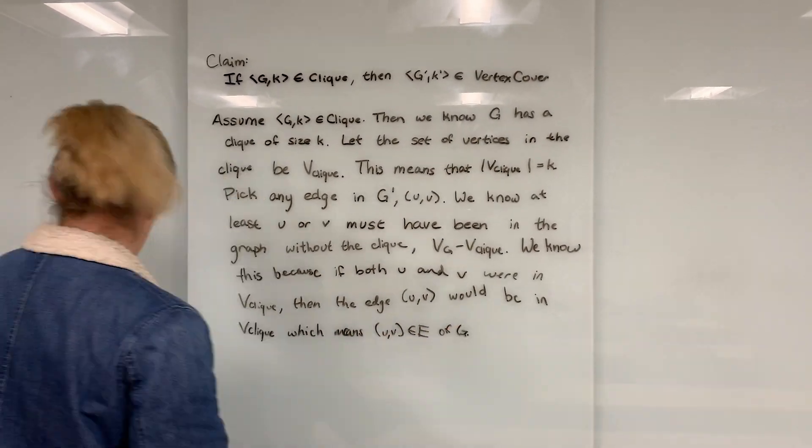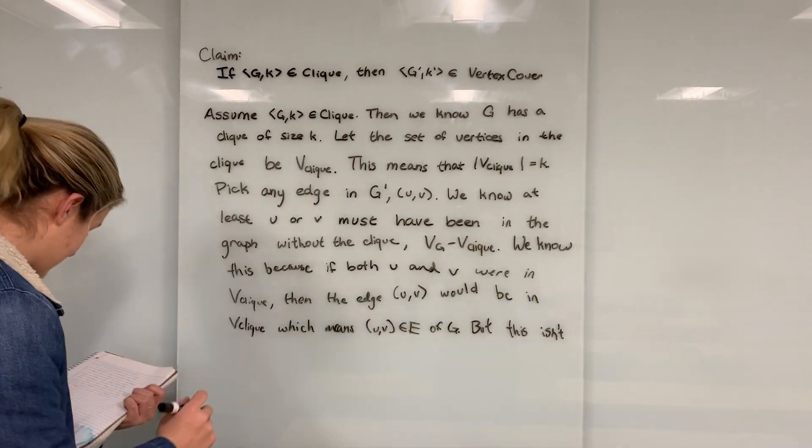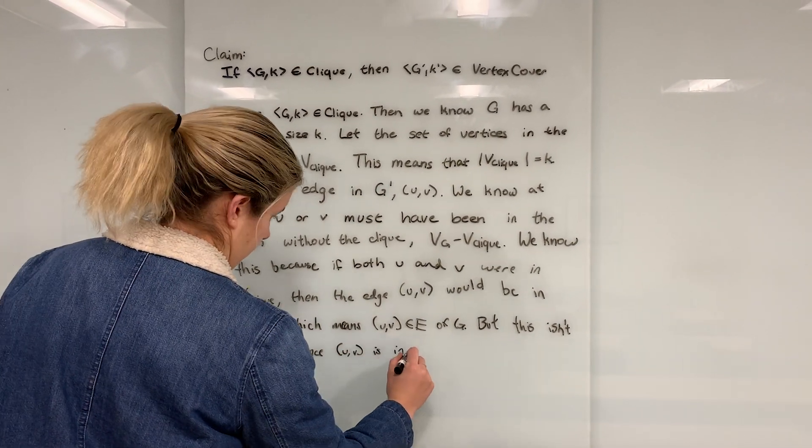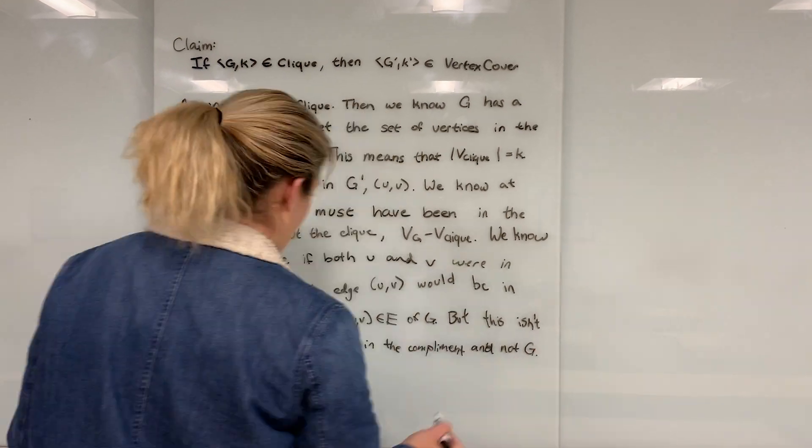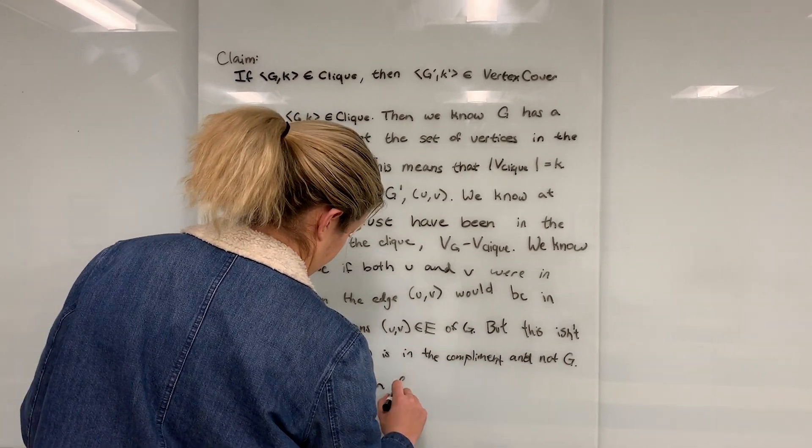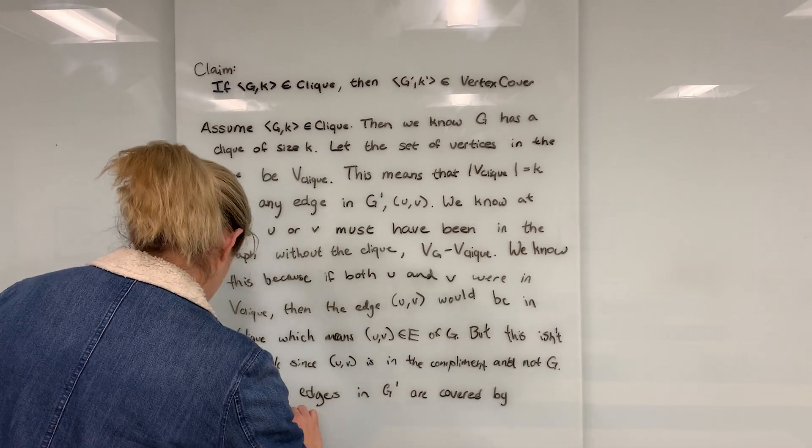Which means Uv is in the set of edges of G. But this is impossible since Uv is in the complement graph. Thus, all edges in G' are covered by the vertices in V'g minus V' clique.